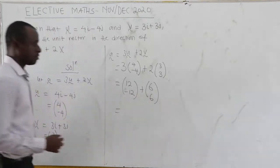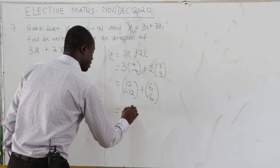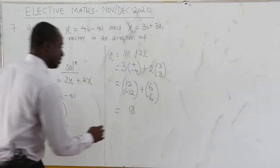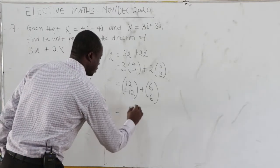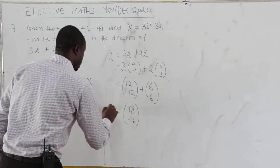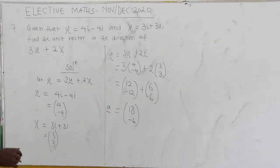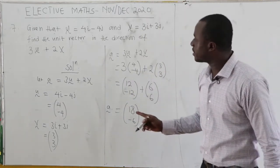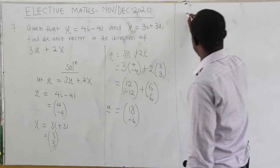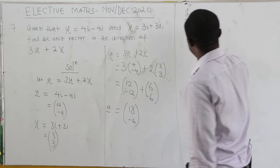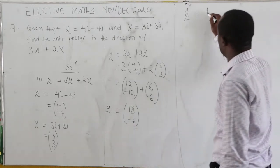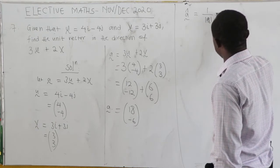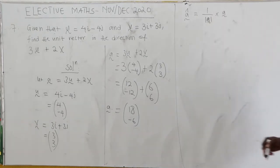12 plus 6 gives us 18, and negative 12 plus 6 gives us negative 6. So our vector a is (18, -6). The question asks us to find the unit vector in the direction of a. The unit vector formula is: 1 over the magnitude of the vector, times the vector itself.